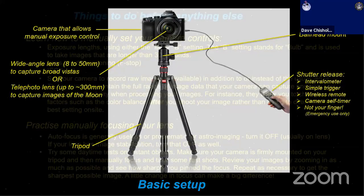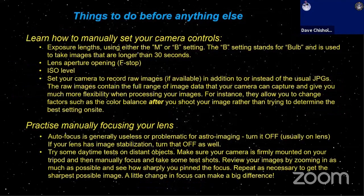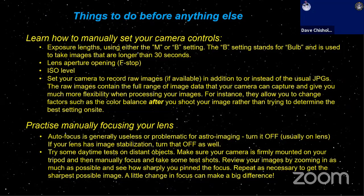Before you get started, there are a few things you really need to look at because astrophotography is different than most other forms of photography. It's challenging and requires you to use settings that you may not be familiar with — settings that aren't usually used in more conventional terrestrial photography. The big thing is you need to know how to manually set your camera controls. You have to dive into your camera manual and learn how to set things in your menus and use the different buttons to have full manual control. You're typically going to use M for manual or B for bulb settings for your exposures. Manual settings let you choose an exposure length up to about 30 seconds.